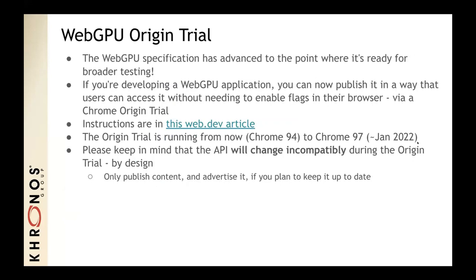Another exciting piece of news is that the WebGPU spec has advanced to the point where it's ready for broader testing. You can now publish a WebGPU app in such a way that users can access it without needing to enable flags in their browser via a Chrome Origin Trial. A recent web.dev article gives instructions on how to set up an Origin Trial key on your own website. The Origin Trial runs from Chrome 94 to Chrome 97, shipping in about January 2022. Please keep in mind that the API will change incompatibly during the Origin Trial — only publish content if you plan to keep it up to date.